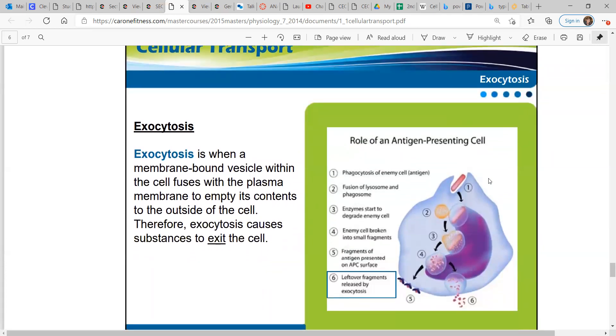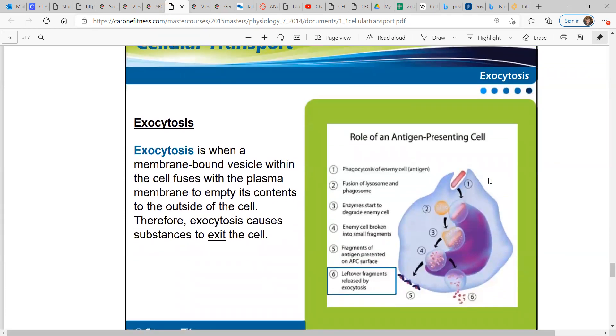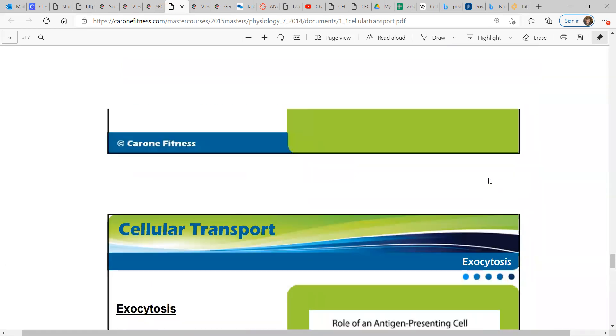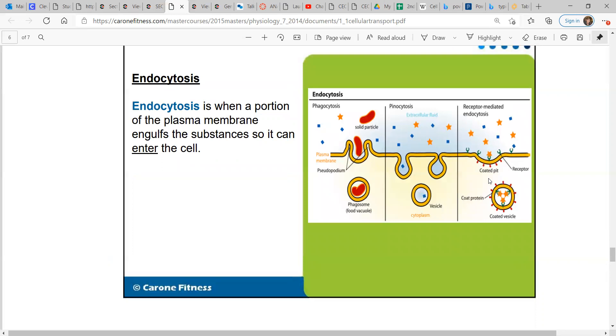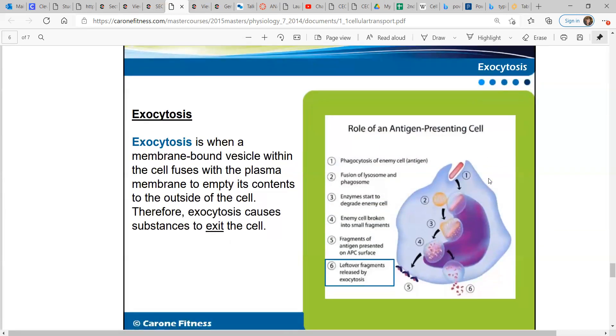Exocytosis is when a membrane-bound vesicle within the cell fuses with the plasma membrane to empty its contents to the outside of the cell. Therefore, exocytosis causes substances to exit. Think of that as an easy way to remember. Endocytosis brings things into the cell. Exocytosis exits the cell.